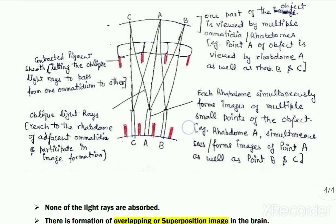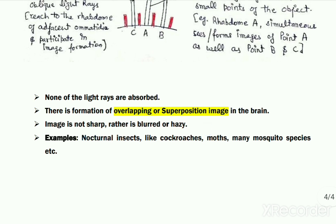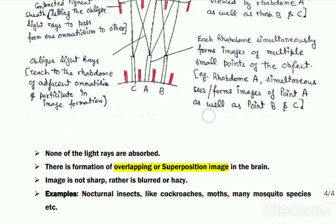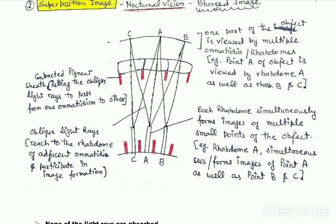The final image formed in the brain consists of many overlapping points or overlapping parts, so such image is termed the superposition image. During superposition image formation, the dim light available is used very efficiently as none of the light rays are absorbed. However, this superposition image is not as sharp as the apposition image — rather it is blurred or hazy. That concludes today's lecture on the structure and working of the compound eye of arthropods. Thank you.